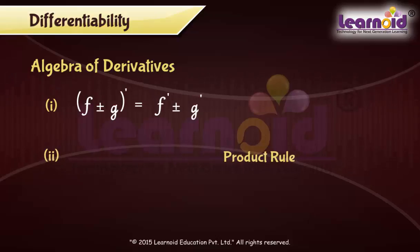Second rule is product rule. Derivative of product of two functions f and g is equal to f'g plus fg'.